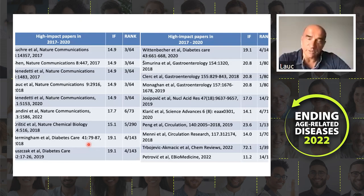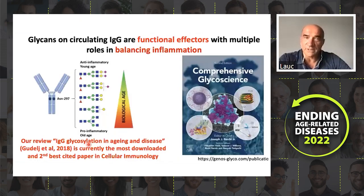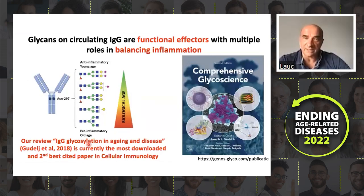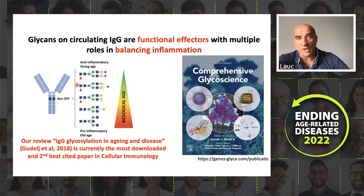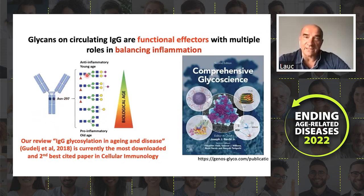One of the proteins we focus on is immunoglobulin G, because for immunoglobulin G we know that glycans attached to the Fc region of the protein are regulating effector functions. Depending on the glycan structure which is attached, immunoglobulin will activate different branches of the immune system and even act anti-inflammatory in some cases.